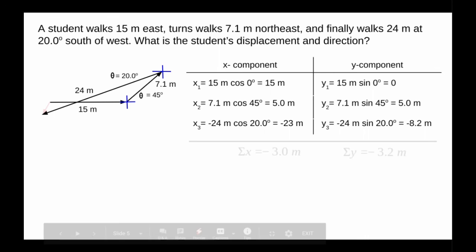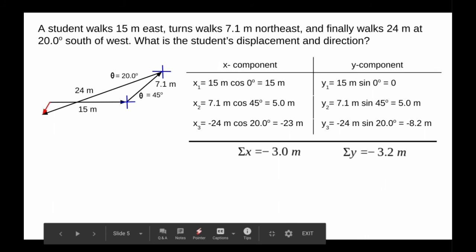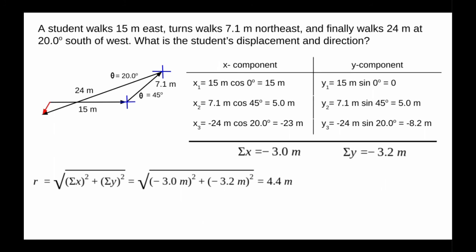Next, we use Pythagorean theorem for the resultant vector that's in red. Square root of the sum of x and y squared, we're going to see that the displacement is 4.4 meters. What we need is the direction so we know at what angle or position this is pointing to.